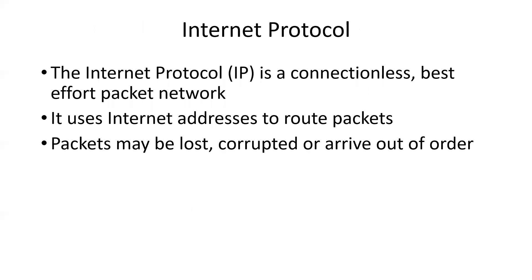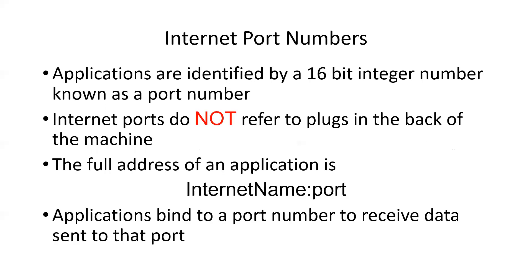The Internet Protocol, which does the routing of internet packets, is a connectionless, best-effort packet network. It uses 32-bit internet addresses to route things. It does not guarantee the packet will get there, that it will arrive uncorrupted, or that it will arrive in order. It just makes an effort to send it. What commonly causes packets to be lost is overflow — networks get so busy they can't handle another packet, so they just drop it.